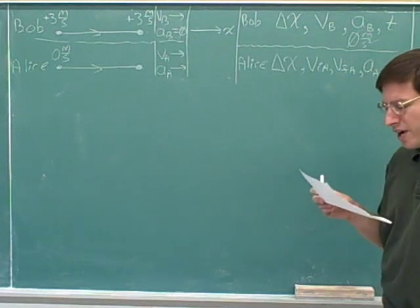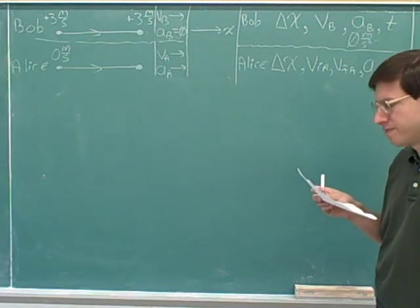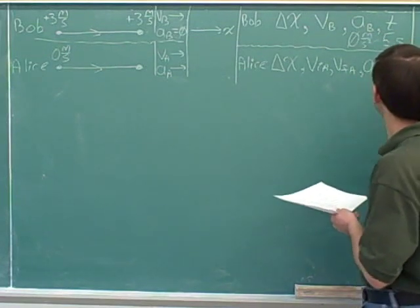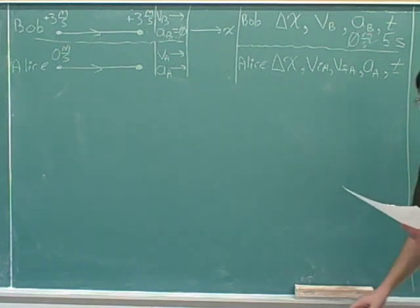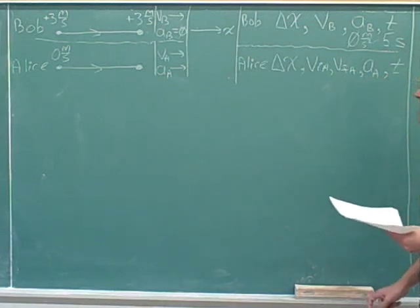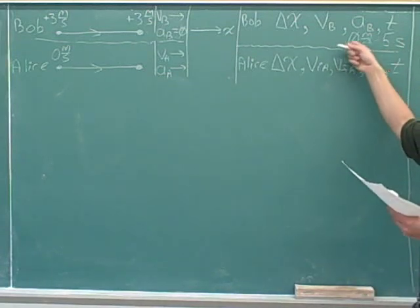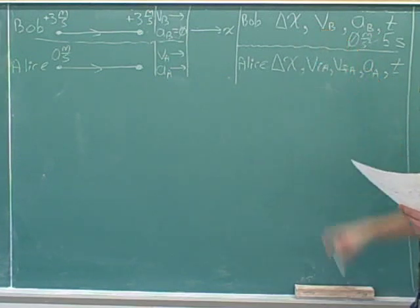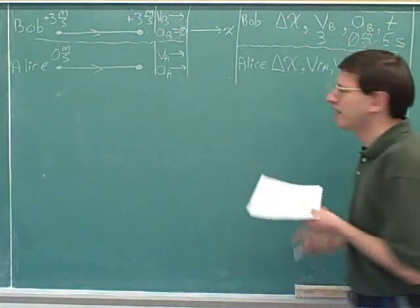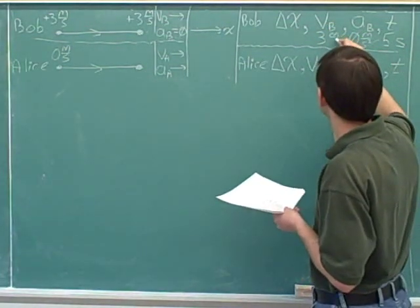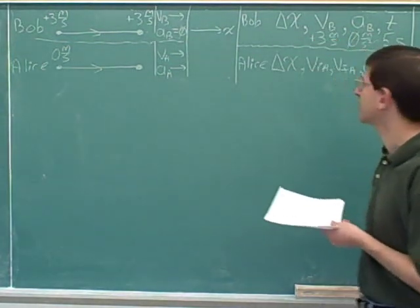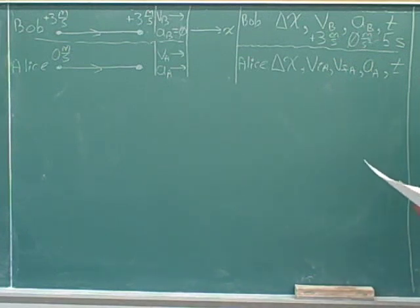Now we have to go through and read carefully through the problem and write down the givens and the question. Bob moves for five seconds — so there we have five seconds. At a constant velocity, we already said that constant velocity meant Bob's acceleration was zero and that Bob's initial and final velocities were the same. A constant velocity of positive three meters per second — putting in the sign is what's really important.